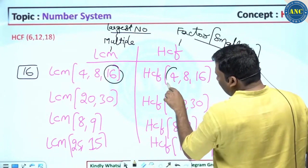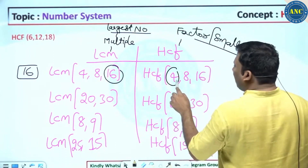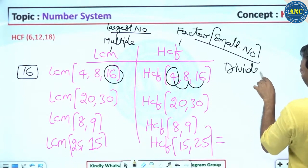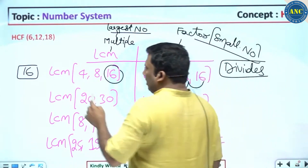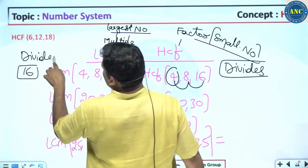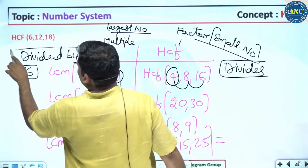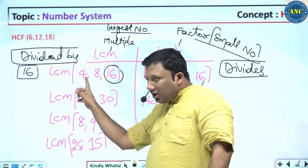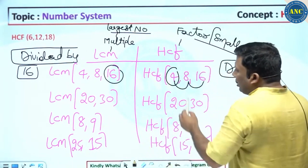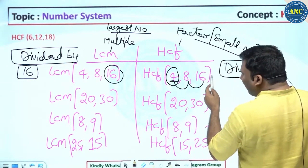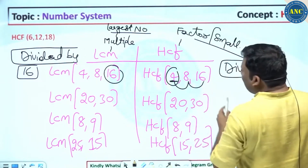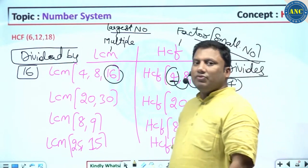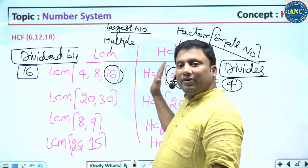For HCF, take the smallest number. If the smallest number divides every other number, that is the HCF. Remember: a factor divides, whereas LCM is divided by. For 4, 8, 16 — 4 divides 8, and 4 divides 16. So HCF is 4. I hope the idea is clear. Difference between LCM and HCF: LCM focuses on the largest number being divisible by all others; HCF focuses on the smallest number dividing all others.